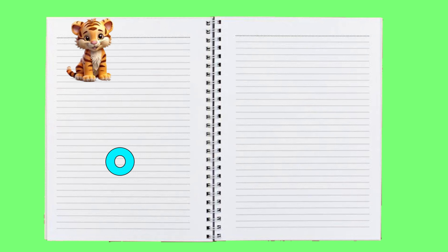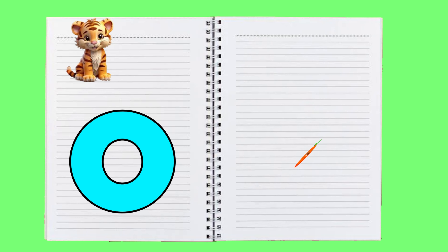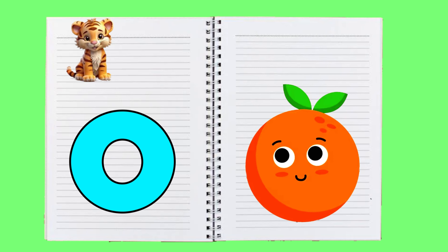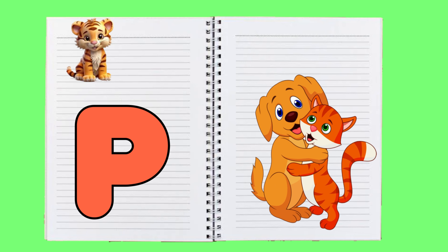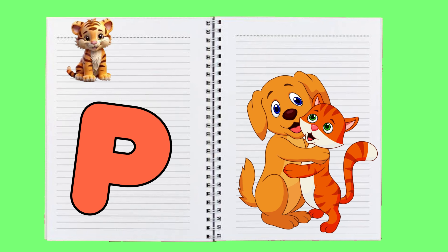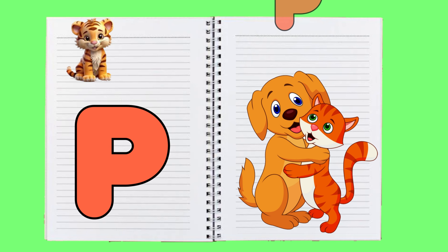O is for orange, o-o-orange. P is for pet, p-p-pet.